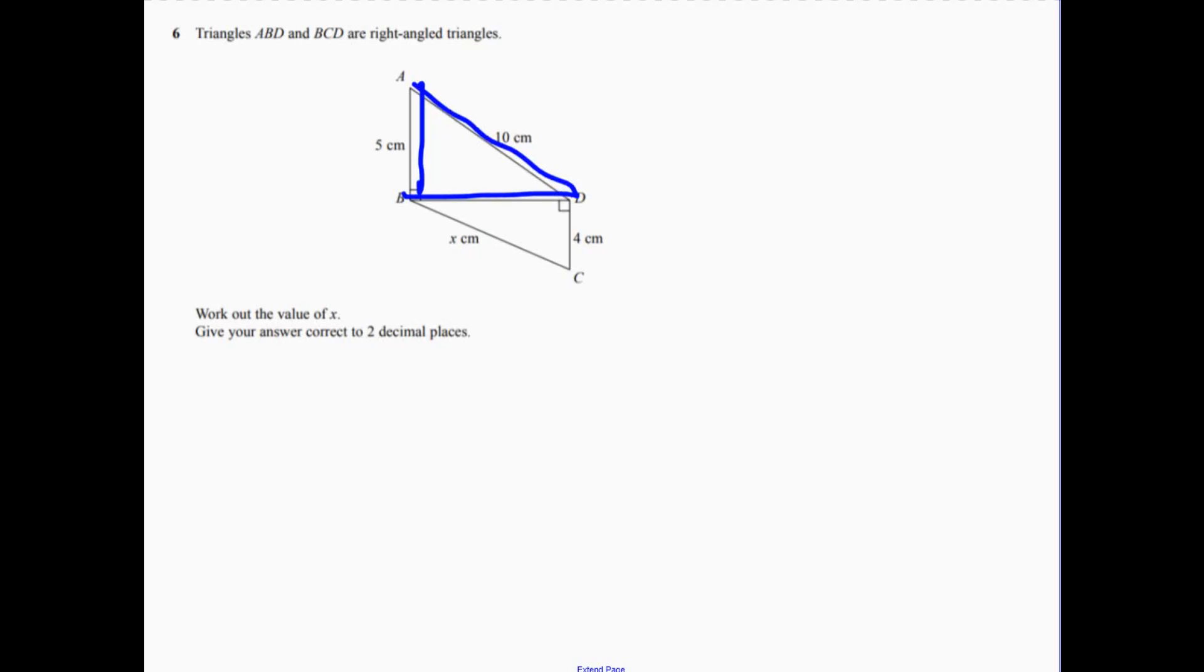So it's 10 squared, that's 100, so 100. Now this, I'm working out this length in here first, take away 25, so that's 75. So this length is not 75, it's the square root of 75.